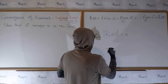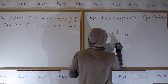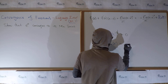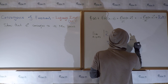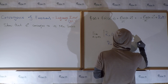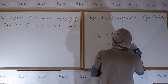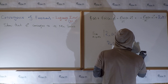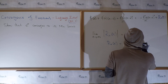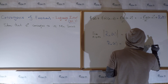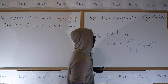Recall that R_n(x) equals the (n+1)-th derivative evaluated at c, over (n+1) factorial, times (x − a)^(n+1), where a is the center.